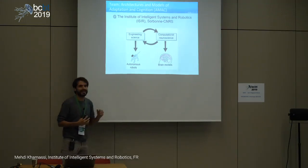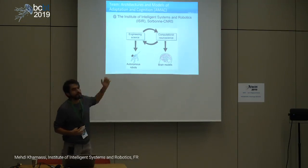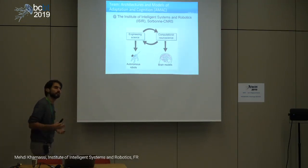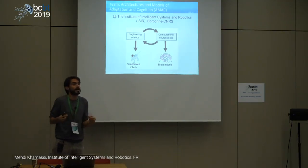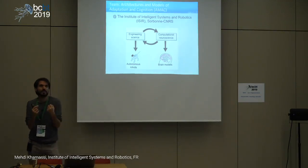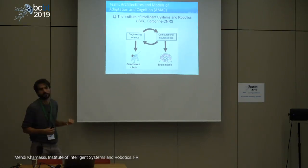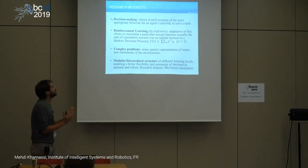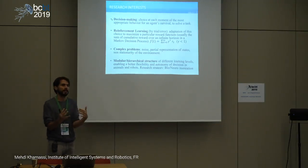We take engineering techniques — machine learning and robots — to come up with new computational models and try to better understand the brain, and sometimes going in the other direction: taking inspiration from mechanisms that enable this flexibility and trying to see if they work well in robots. The core of our research interest is really decision-making.